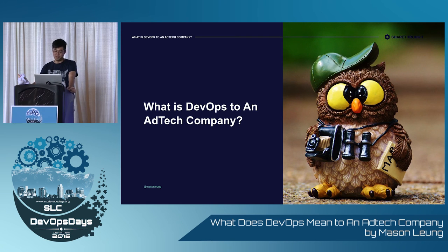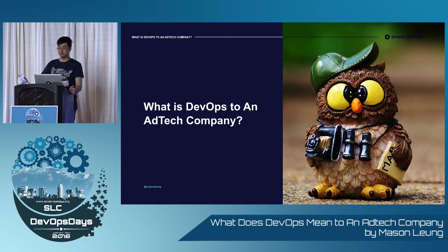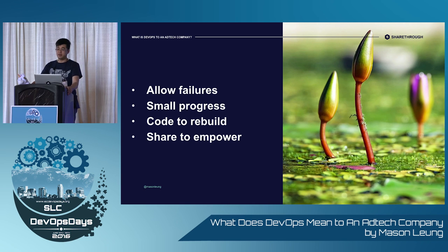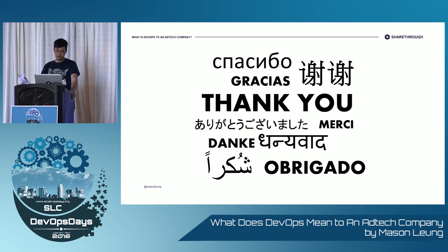So what does DevOps mean to an ad tech company? There has been a lot of discussion about what DevOps is and isn't. Is it a process? Is it a culture? Is it repurposing sysadmin? Is it a job title? To us, as an ad tech company, DevOps is an environment that allows failure and progress with small changes. DevOps has codified everything to allow us to build with less fear. DevOps is sharing knowledge and empowering others. We believe DevOps can grow faster organically, and one day the dev and ops will be interchangeable. I hope you can find relevant information from my journey to assist yours. Thank you for your time — my name is Mason Leung, and I'm still learning DevOps at an ad tech company.